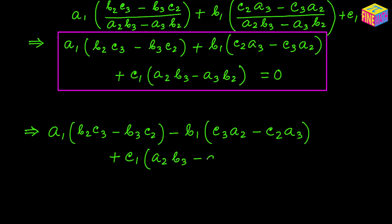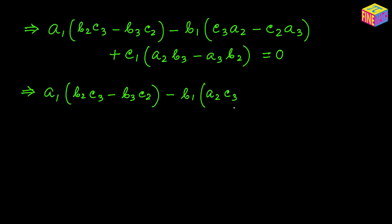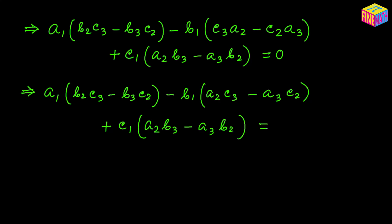Keeping the c₁ term as is — c₁ times (a₂b₃ minus a₃b₂) — we can rewrite this as: a₁(b₂c₃ minus b₃c₂) minus b₁(a₂c₃ minus a₃c₂) plus c₁(a₂b₃ minus a₃b₂), and all of this equals 0. I'm just changing the position of terms; it's still the same expression.